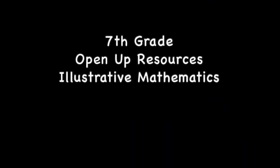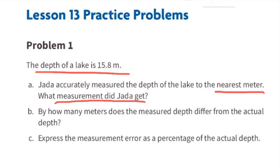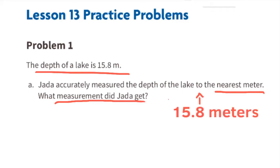7th grade Open Up Resources Illustrative Mathematics, Unit 4 Lesson 13: Measurement Error. Problem 1 — the depth of a lake is 15.8 meters. Jada accurately measured the depth of the lake to the nearest meter. 15.8 meters rounded to the nearest meter is 16 meters, because 15.5 and above rounds up to 16 meters.